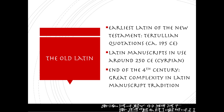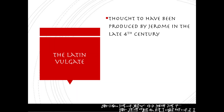There were so many copies by the end of the fourth century that the complexity of the Latin manuscript tradition had become very, very great. The Latin Vulgate was thought to have been produced by Jerome in the late fourth century, during this period where the Latin textual tradition had become very complex due to the significant number of manuscripts.